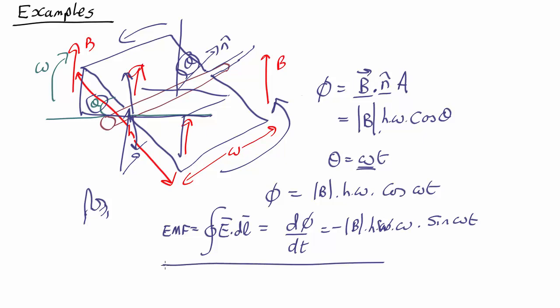So that's given us an equation for the nice alternating electric current we get, the voltage we get in the circuit.